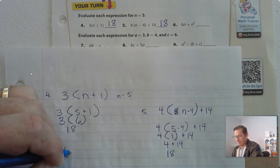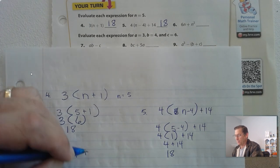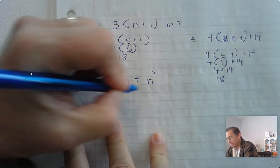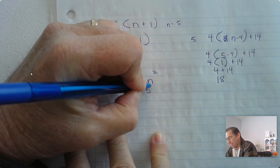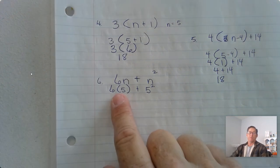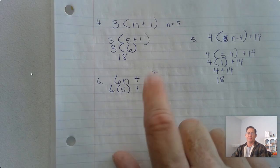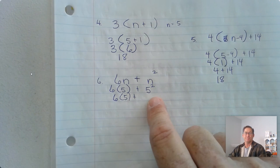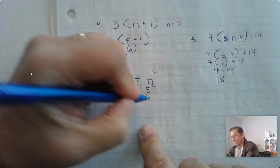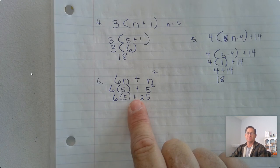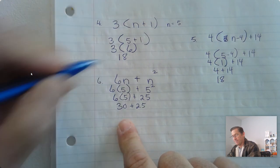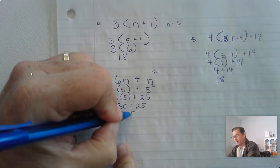Number 6: we have 6 times n plus n squared, and n is 5. Substitute 5 for n. So we have multiplication, addition, and exponents — exponents are first. Rewrite everything else: 5 squared is 25. Now we have multiplication and addition — multiplication comes first. 6 times 5 is 30, plus 25. 30 plus 25 is 55.